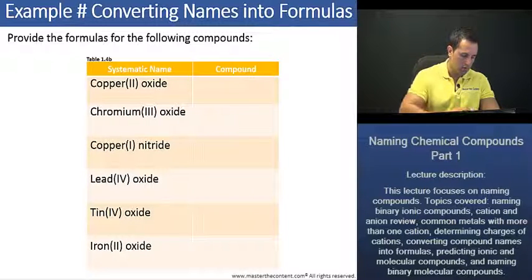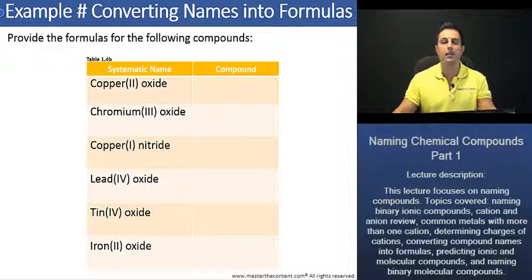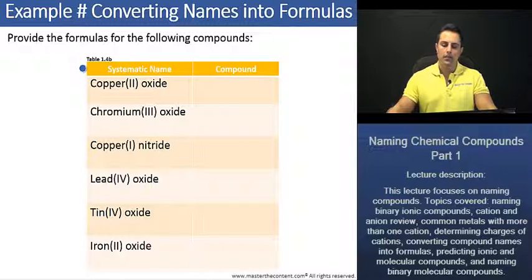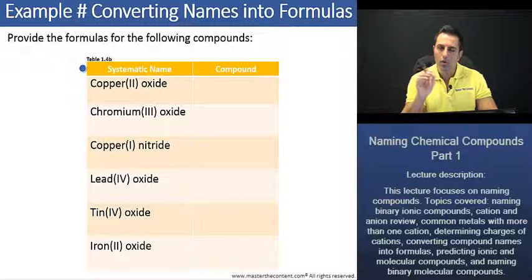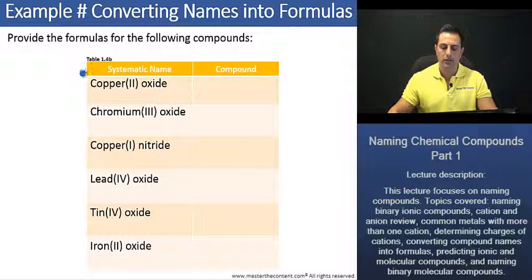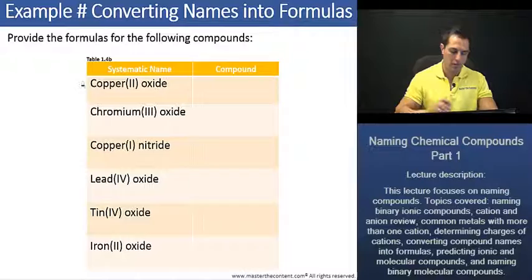Let's go ahead and do a few examples on the next slide. We are now going to example converting names into formulas. Provide the formulas for the following compounds, Table 1.4b. We are given the systematic name, we just need to complete the table by providing the compounds. At this point I am going to ask you to pause the video and I encourage you to try this yourself. However, if you still require a little bit of practice, I'll provide an explanation now for copper(II) oxide.